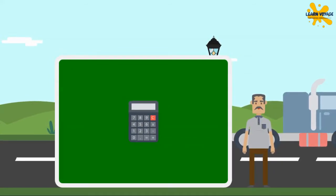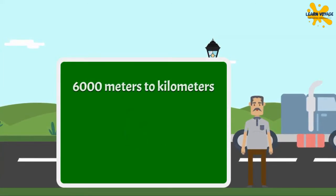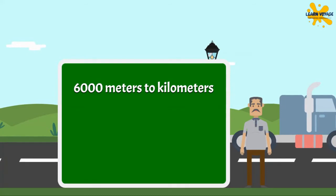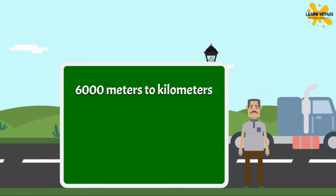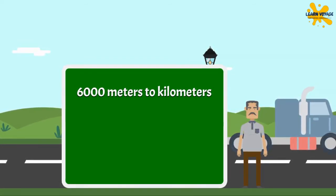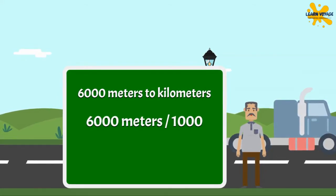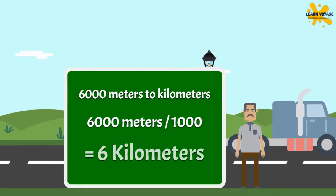Now let's do some calculations to convert meters to kilometers. I have to drive 6000 meters to reach the garage. We need to divide the value in meters by 1000 to get the value in kilometers. So, 6000 meters divided by 1000 gives us 6 kilometers.